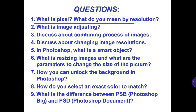There are some questions for you. Number 1: what is a pixel, and what do you mean by resolution? Number 2: what is image adjusting? Number 3: discuss the combining process of images. Number 4: discuss changing image resolutions. Number 5: in Photoshop, what is a smart object? Number 6: what is resizing images and what are the parameters to change the size of a picture? Number 7: how can you change the background in Photoshop? Number 8: how do you select an exact color to match? Number 9 and 10: what is the difference between PSB (Photoshop Big) and PSD?